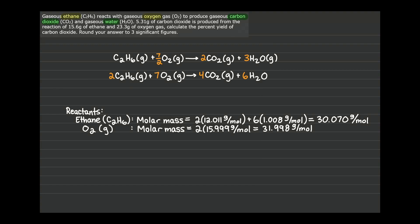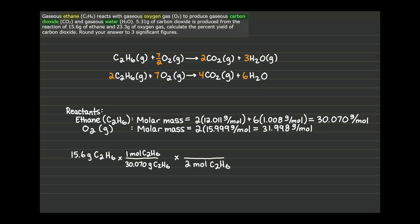We start by copying down the amount of ethane given in the problem: 15.6 grams of ethane. We convert that to moles using our molar mass: 15.6 g × (1 mol / 30.070 g) = moles of ethane. Then we use the balanced equation coefficients — 2 moles ethane produce 4 moles CO2 — as a conversion factor. Multiplying everything together, we get 1.04 moles of carbon dioxide produced from the ethane.